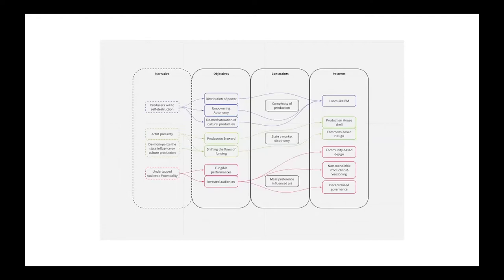To give a little explanation: we have the producer's will to self-destruction — these are narratives, don't take them to their maximum. We have artist precarity, what Ulle was mentioning about bureaucrats staying fully employed during crisis while artists are being sacked. We also have monopolization of state influence on cultural production, and audience potentiality. The objectives I harvested during the session — these are impressions — were distribution of power, empowering the economy, the mechanization of cultural production.